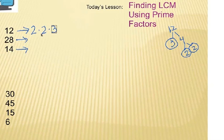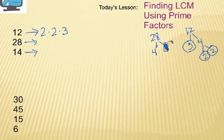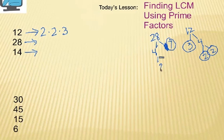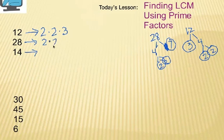Next number is 28. Let's write it as a product of prime factors. 28 could be written in a lot of pairs of factors, but let's go with 4 times 7. 7 is prime, and 4 is not, so let's break apart 4 again, and that would be 2 times 2. Write it in order to the left, and that would give us 2 times 2 times 7.